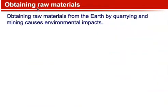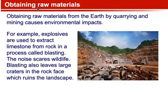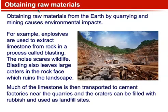Obtaining Raw Materials. Obtaining raw materials from the earth by quarrying and mining causes environmental impact. For example, explosives are used to extract limestone from rock in a process called blasting. The noise scares wildlife. Blasting also leaves large craters in the rock face, which ruins the landscape. Much of the limestone is then transported to cement factories near the quarries, and the craters can be filled with rubbish and used as landfill sites.